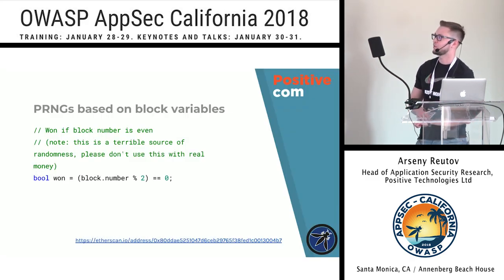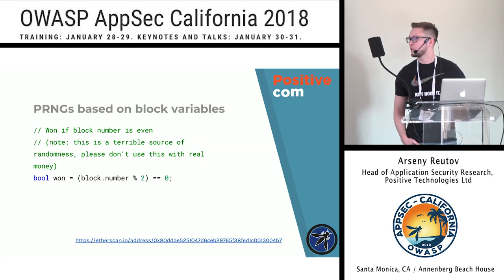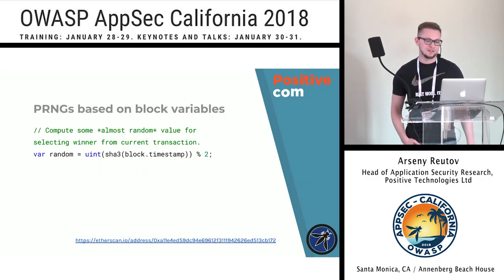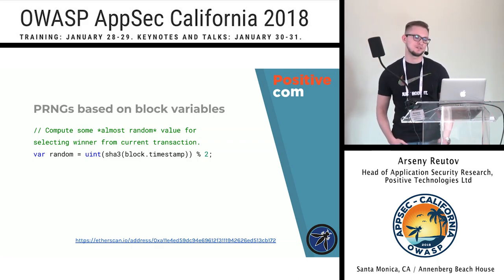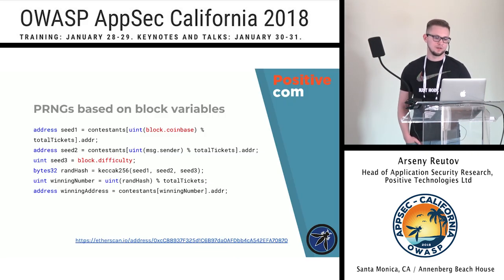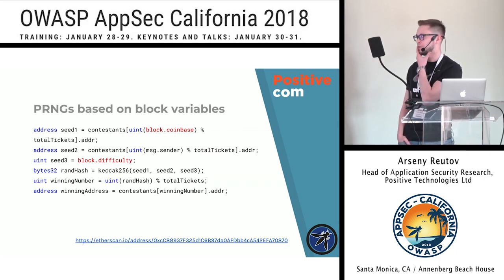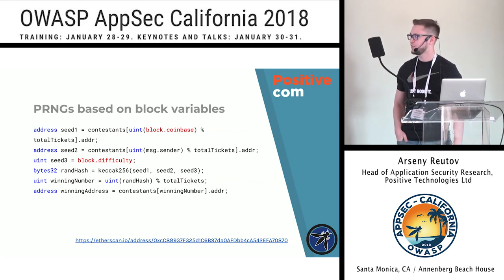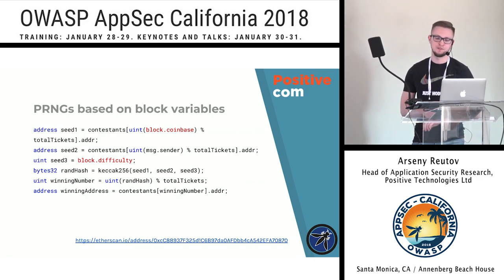These are examples of simple RNGs based on block variables. One RNG just relies on block number — the author even admits in a comment that it can be considered unsafe. Another example uses timestamp as a source of entropy, which of course cannot be secure. A third example uses Coinbase — the miner's address — and the block difficulty variable. If you call the target contract and use the same code in your exploit, the outcome will be the same.